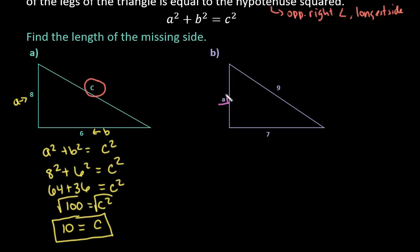This time we're trying to find A. So this would be B and this would be C because it is opposite of the right angle.